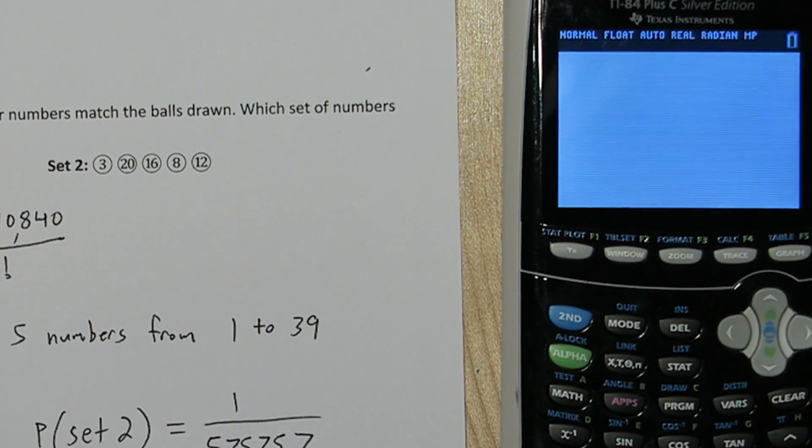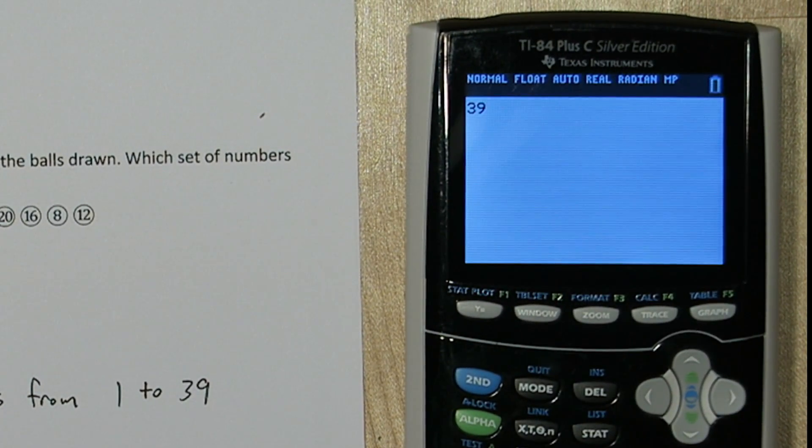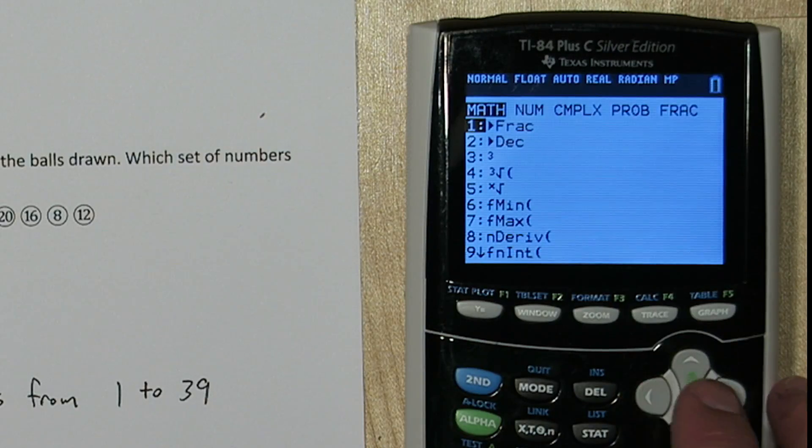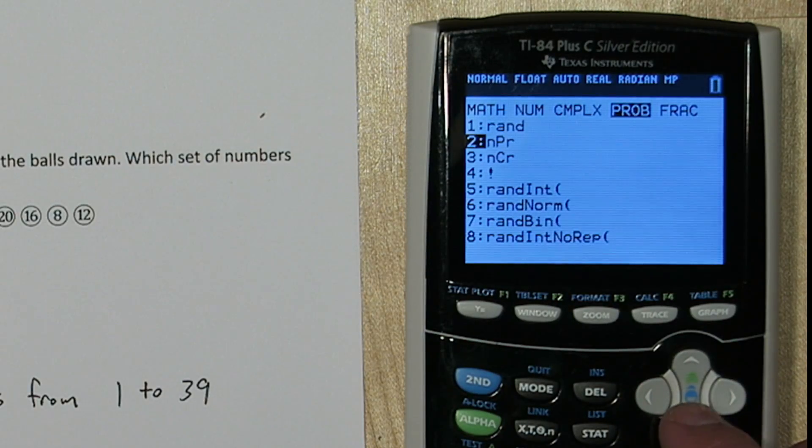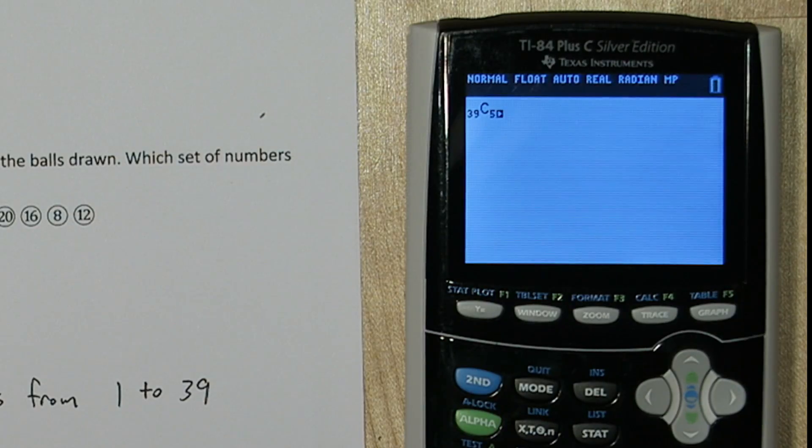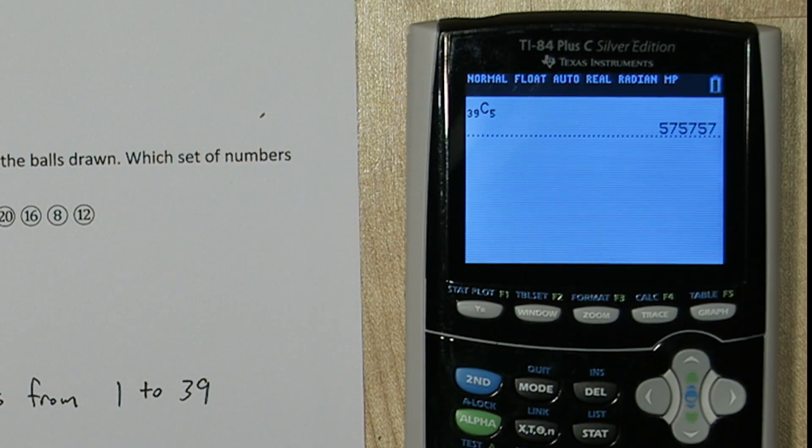Or you can do this on your calculator, by typing 39, then pressing the math button, going over to probability and choosing NCR, and typing 5. There we go.